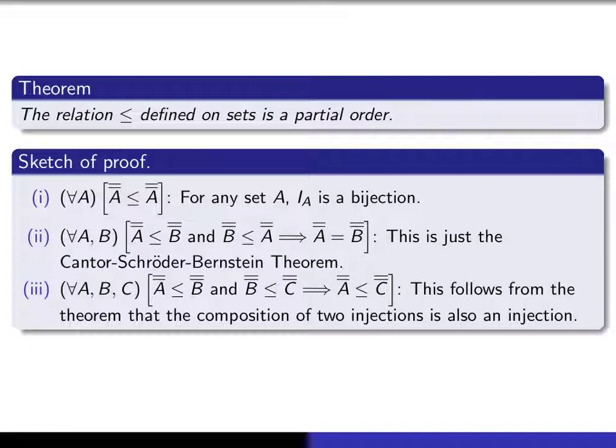The transitivity, which is this one here, follows because if there exists an injection from A to B, and an injection from B to C, then by taking the composition of those two injections, that's going to be an injection from A into C. Remember, we proved a long time ago that the composition of injections is also an injection.